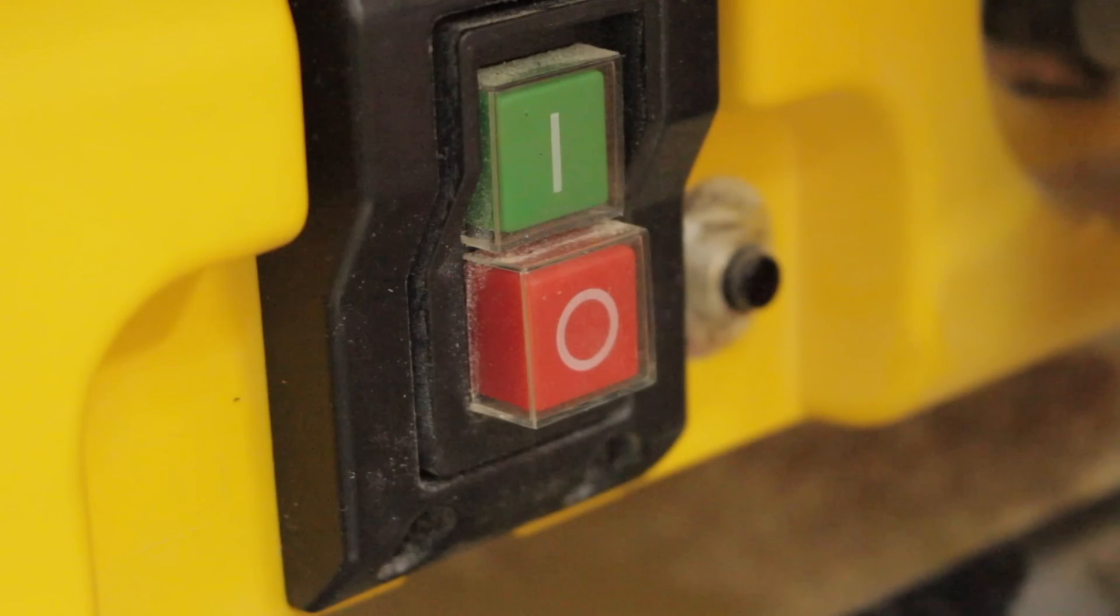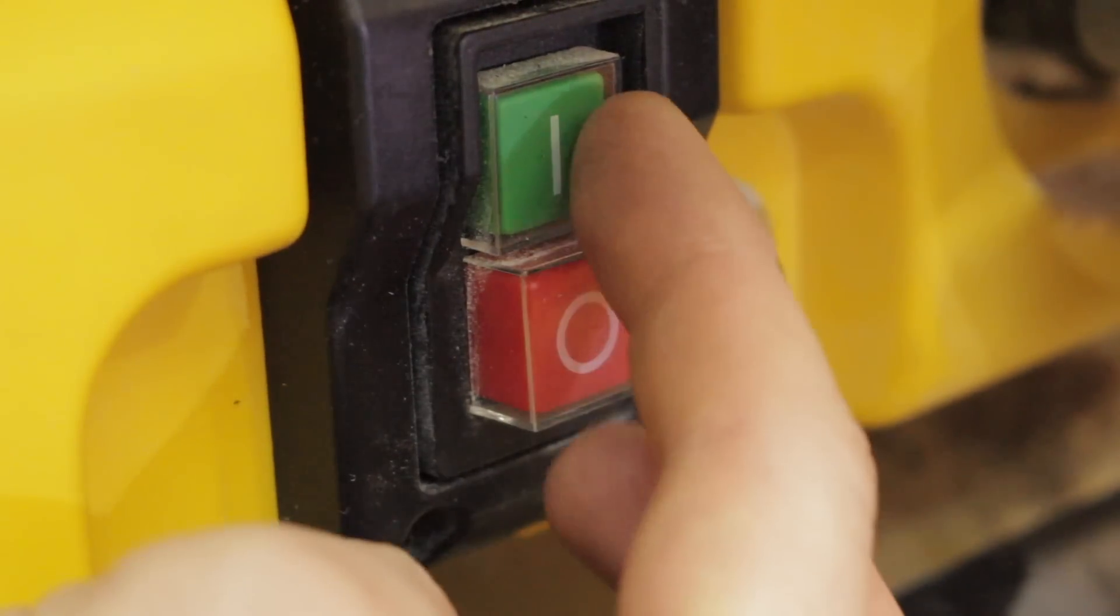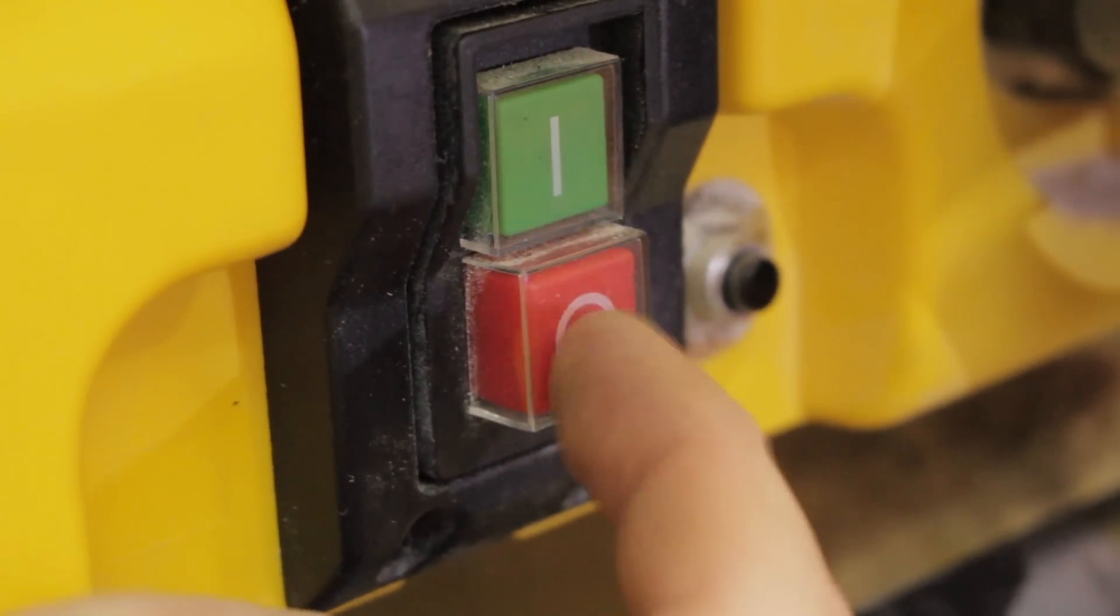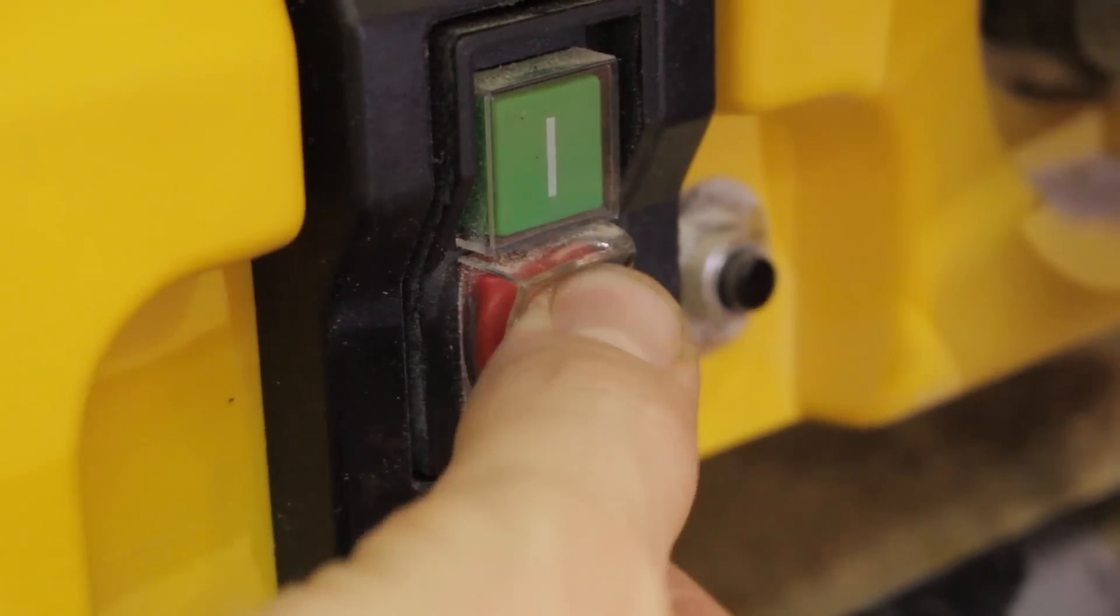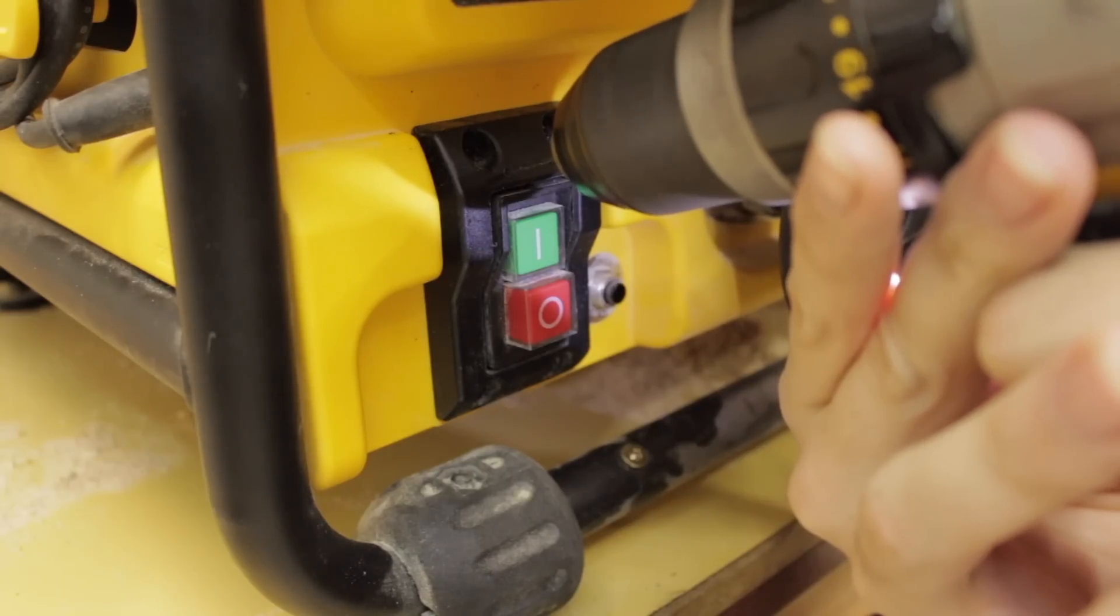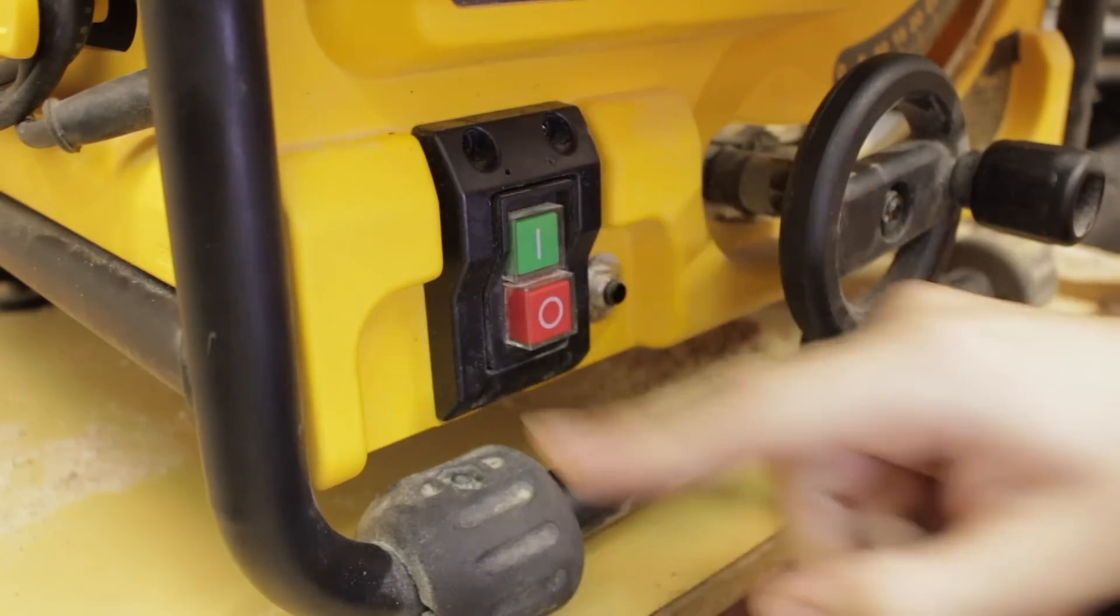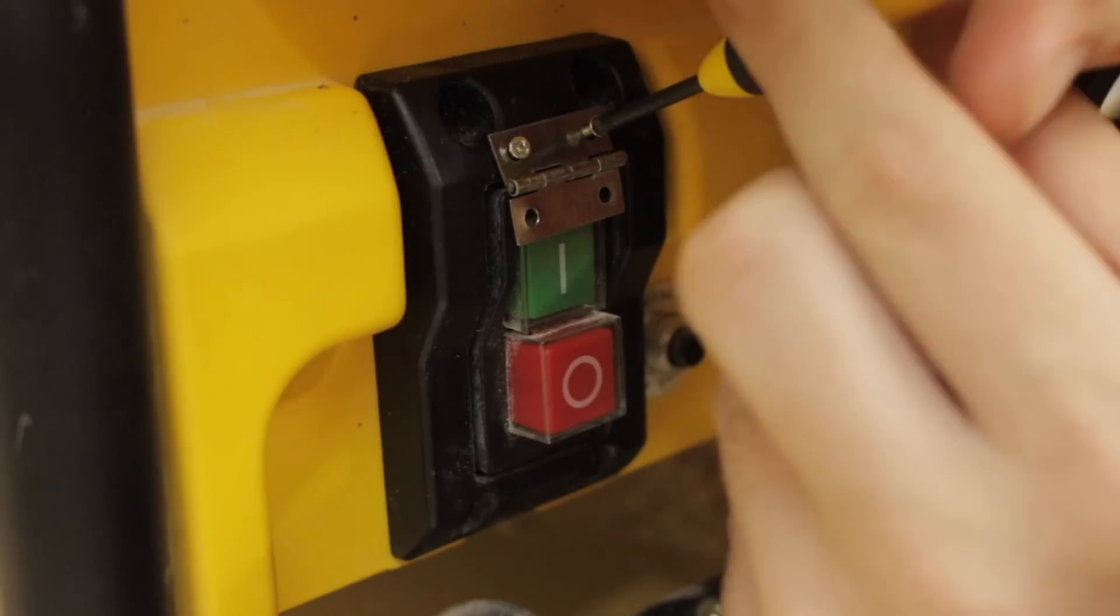So I got my table saw and I didn't like the way the switch was made. This off button was really hard to press when you wanted to turn off the saw, especially you had to look down. So what I did, I tried to make a kill switch.